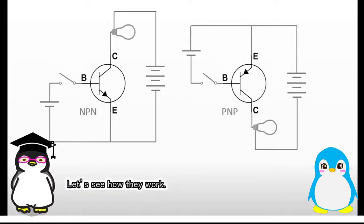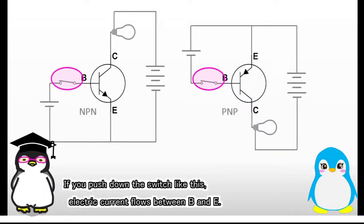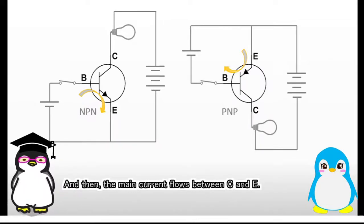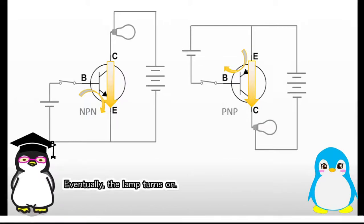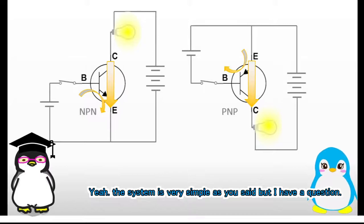Let's see how they work. Actually, the system is very simple. If you push down the switch like this, electric current flows between B and E, and then the main current flows between C and E. Eventually the lamp turns on. Yeah, the system is very simple as you said, but I have a question.